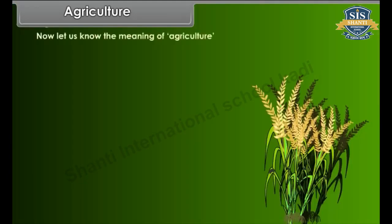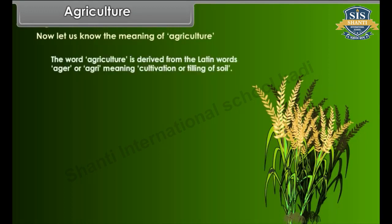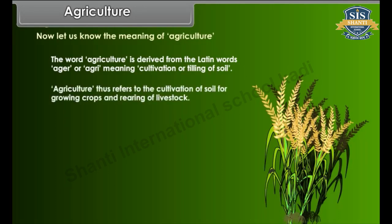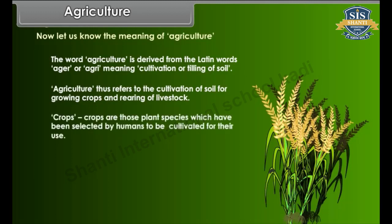Let us know the meaning of agriculture. The word agriculture is derived from the Latin words aga or agri, meaning cultivation or tilling of soil. Agriculture thus refers to the cultivation of soil for growing crops and rearing of livestock. Crops are those plant species which have been selected by humans to be cultivated for their use.